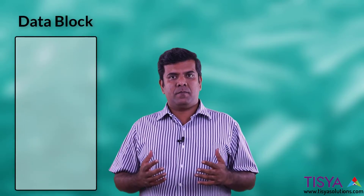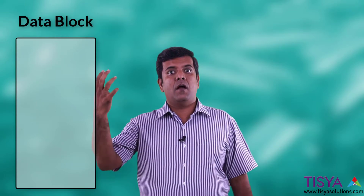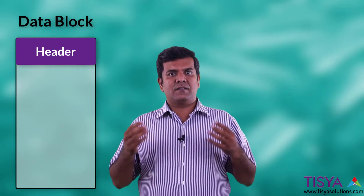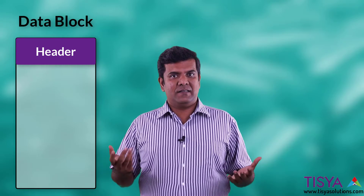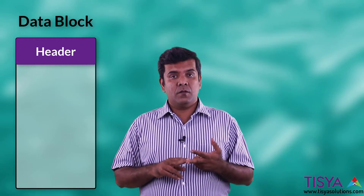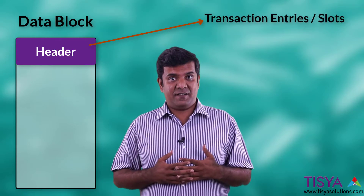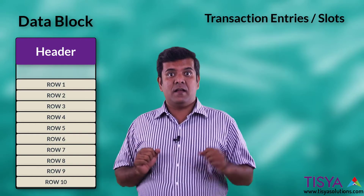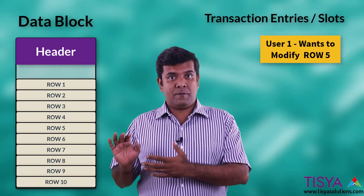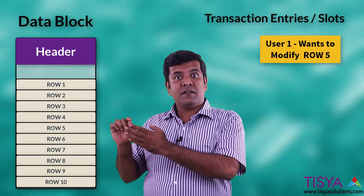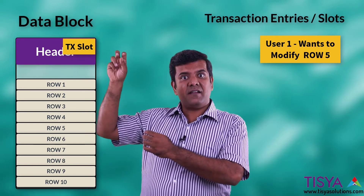What is the structure of a data block? A data block, depending on the size you specify, could be 2, 4, 8, 16, or 32 KB. It is organized with: number one, a header for the block. The header has some basic information about the block, like which segment type it belongs to. Number two, it has space for transaction entries. If a block has ten rows and somebody is performing a DML on any one of those rows, even before the DML can perform an update, a transaction slot or transaction entry has to be acquired in the header.